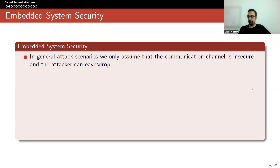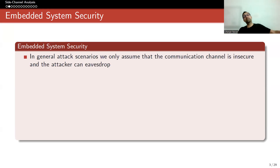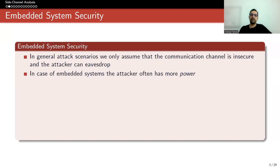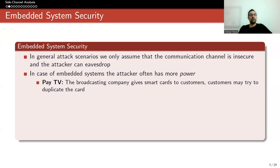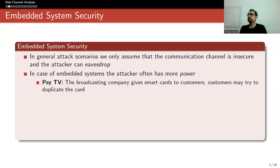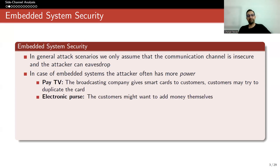In general attack scenarios, we only assume that the communication channel is insecure and the attacker can eavesdrop. This is what we assumed so far — the main idea when we were designing cryptographic algorithms. In the case of embedded systems, the attacker often has more power. For instance, think about pay TV: the broadcasting company gives smart cards to customers, and customers may try to duplicate the card, because you're physically giving them a card or a device.